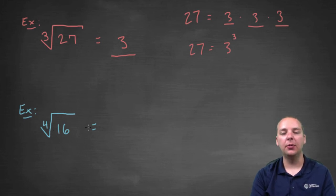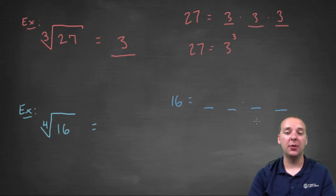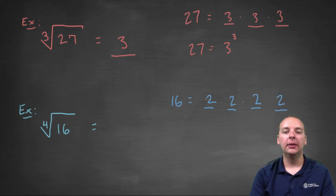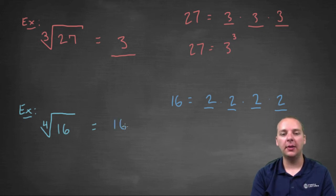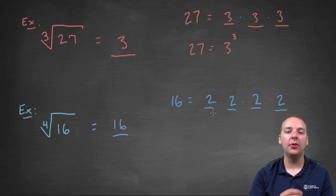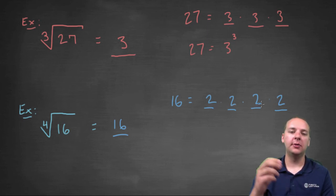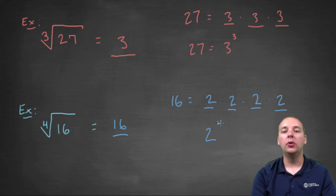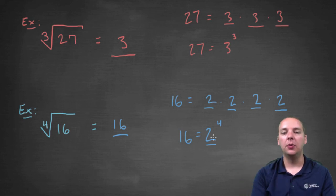Now the fourth root of sixteen: we need four factors of the same number that multiply to sixteen. One times one times one times one — no. Two times two times two times two: two times two is four, four times two is eight, eight times two is sixteen. The fourth root of sixteen equals two. Note that these have to be the same factor — it's got to be the same value repeated, because that's what makes it two to the fourth power equal to sixteen.